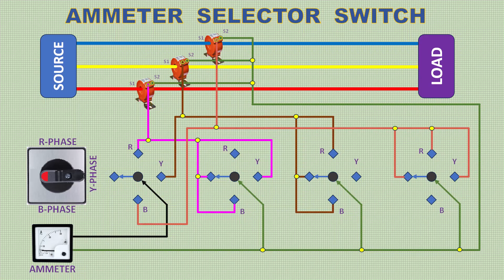At zero position there is no current in the Ammeter. Now change Selector 0 to R phase. This time only R phase current will show.